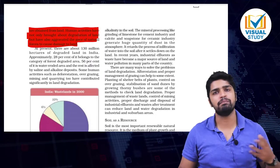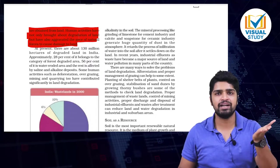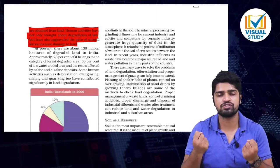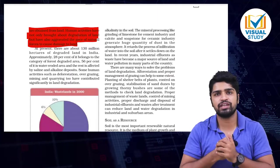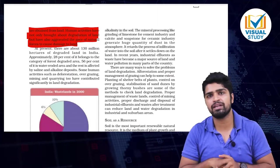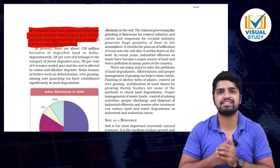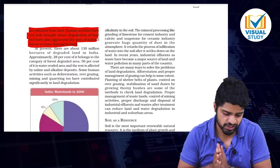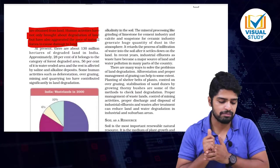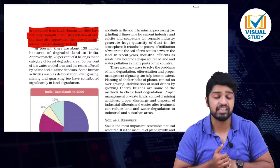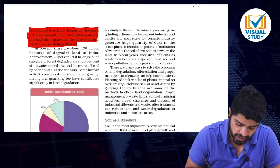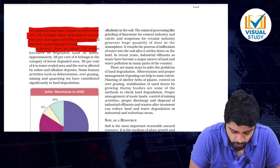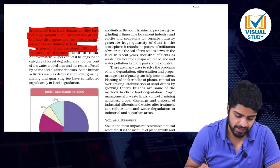We are humans who want development — we construct cement buildings, and cement increases atmospheric temperatures, which increases global warming, and indirectly the value of land starts diminishing. At present, there are about 130 million hectares of degraded land in India. Approximately 28% belongs to forest-degraded area, 56% belongs to water-eroded area, and the rest is saline and alkaline.